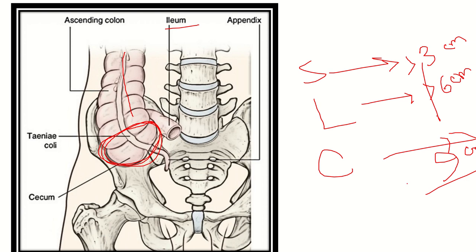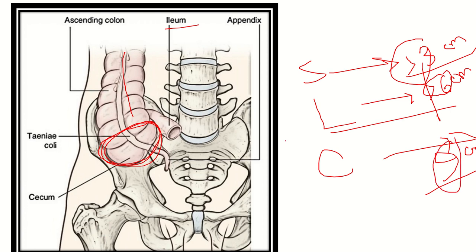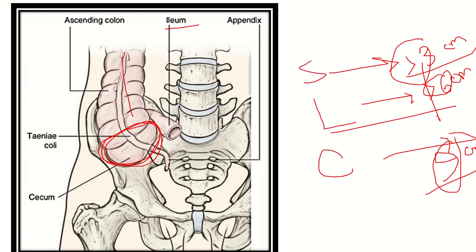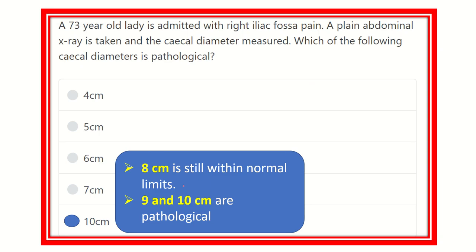These three numbers are very important — three, six, and nine. Think of it as increasing by three each time: small intestine three centimeters, large intestine six centimeters, and cecum nine centimeters. So eight centimeters is still within the normal limit, while nine and ten centimeters are pathological.